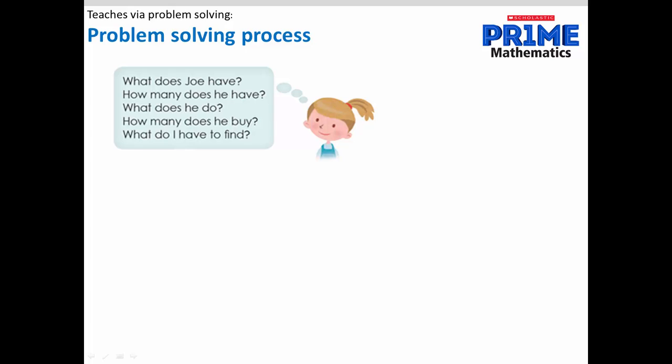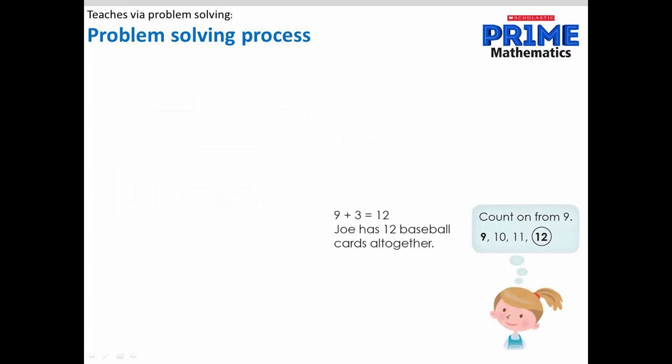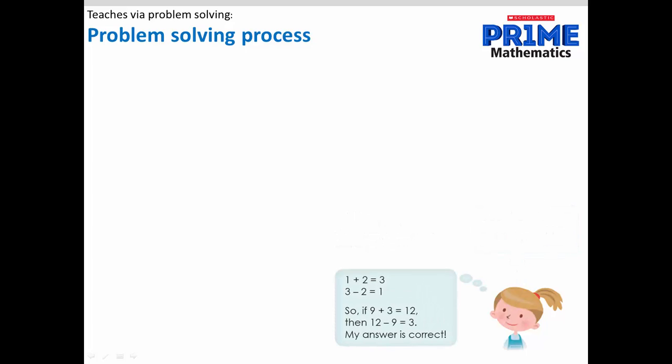In this example, thought bubbles firstly demonstrate the questions that a student would need to think through to understand the problem. When the problem is understood, as Step 2 in the problem, the thought bubbles model planning the strategy used to find the answer. In this case, addition. Step 3 of this problem demonstrates two ways of finding the answer: using a number sentence and counting on. Both strategies have been taught previously in this chapter. Then, in Step 4, students are given an example of a way to check that the answer is correct. This step of validating an answer and considering whether it is reasonable is a very important step in problem solving.